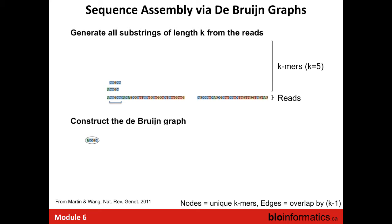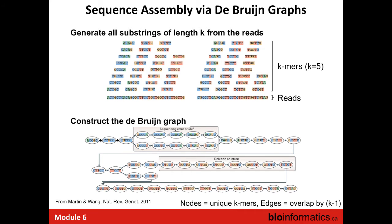We construct the de Bruijn graph by adding the first k-mer as a single node, then moving the window over by one base. Each successive k-mer overlaps the previous by k-1 bases. We add that k-mer as another node and draw an edge between them. We do this for all reads. If we encounter the same k-mer in a different read, we reuse the existing node rather than adding a new one. The number of nodes equals the number of unique k-mers across the entire read dataset.